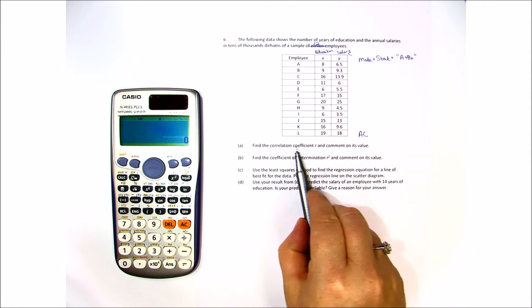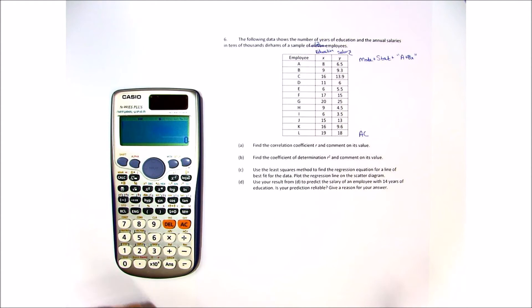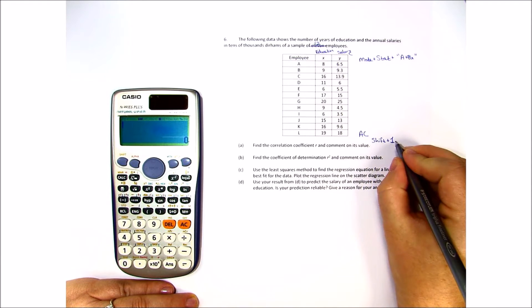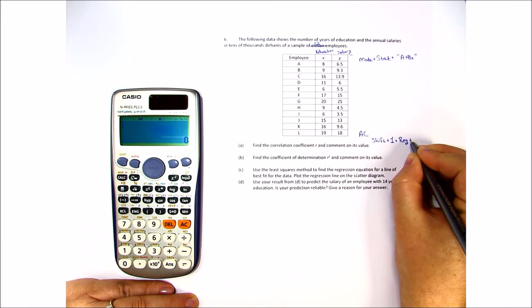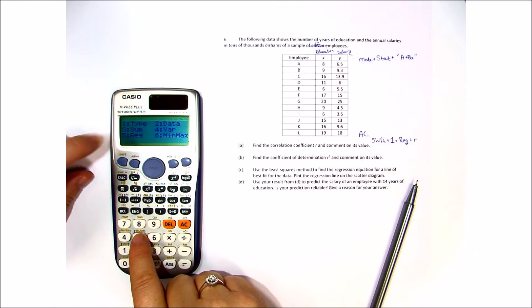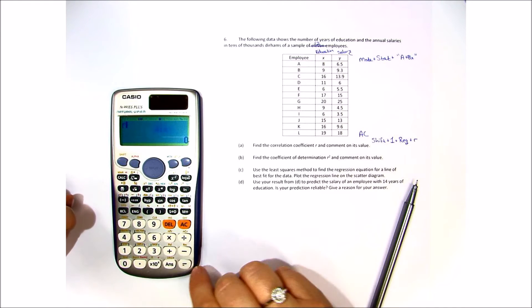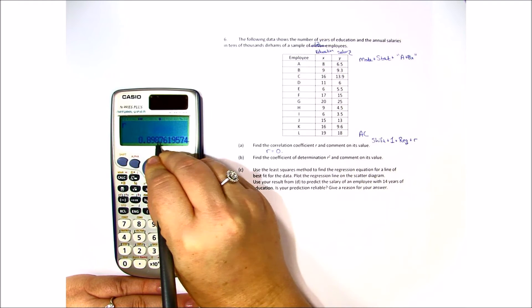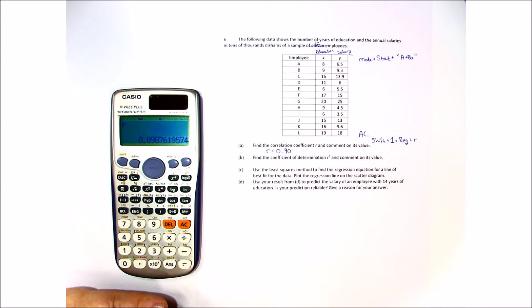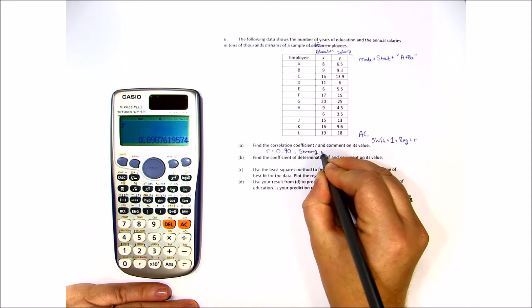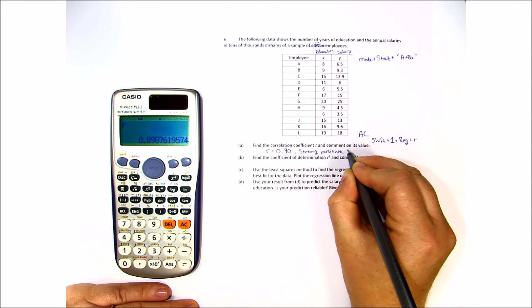Now the first question says find the correlation coefficient r and comment on its value. To do this you have to go down here to this yellow stat button. So you have to hit shift, then the number 1 to go into stat, then you go into regression and you choose r. So let's do that shift, 1, regression in this case is number 5, and we're going to choose r. And we get that r equals 0.898 so we're going to do 0.90. In other words, we have a strong positive linear relationship.